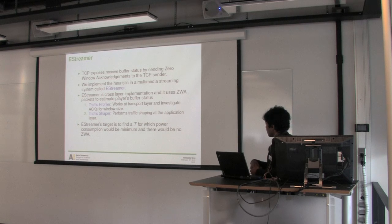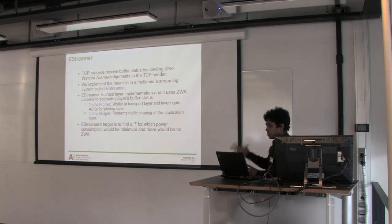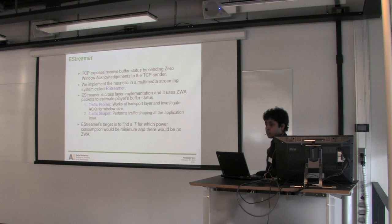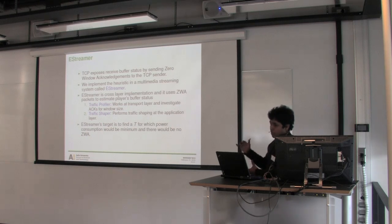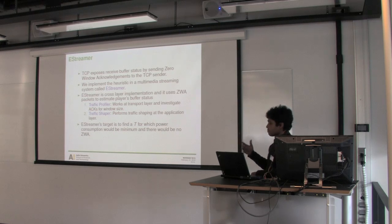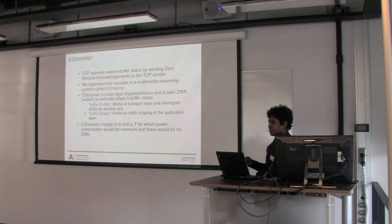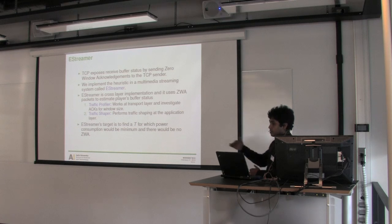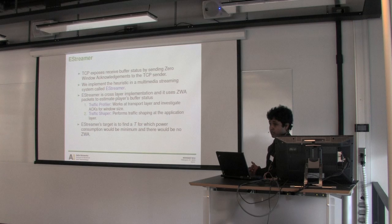Based on that model, we developed an energy-efficient streaming system called eStreamer, implementing the heuristic that power consumption increases when the burst size exceeds the TCP receive buffer. As seen earlier, TCP exposes the client buffer status via zero window advertisements. eStreamer uses this information to select an energy-optimal burst size. It has two components: a traffic profiler and a traffic shaper. The traffic shaper monitors the window size advertised by the client; whenever it finds a window size of zero, it knows the client buffer is full and determines what the next optimal burst size should be — one with no zero window advertisements and low power consumption.